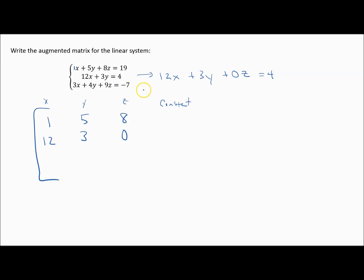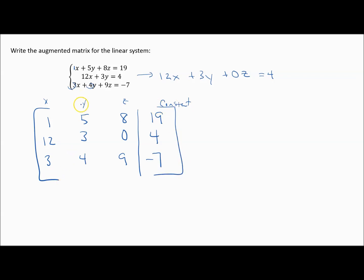For the third equation, the coefficients are 3, 4, 9. Then we need the vertical bar to represent the equal sign. The first equation equals 19, 4 is the constant for the second equation, and negative 7 is the constant for the third. So x, y, and z are each in a column, equals is a vertical line, and on the other side are the answers.